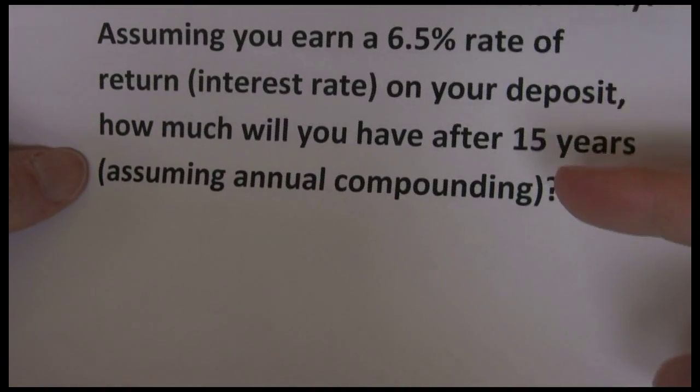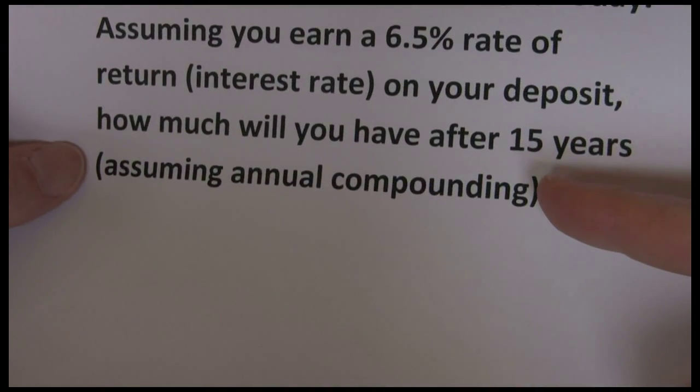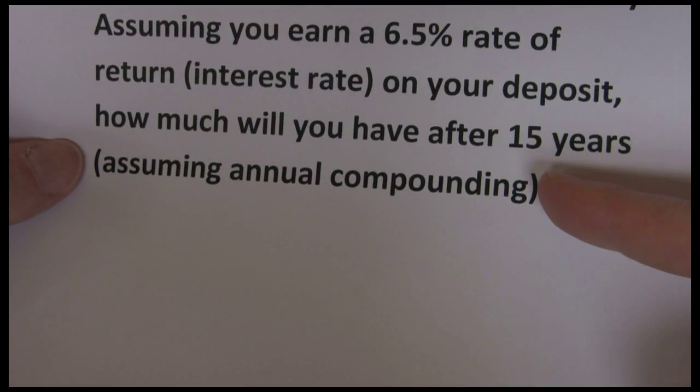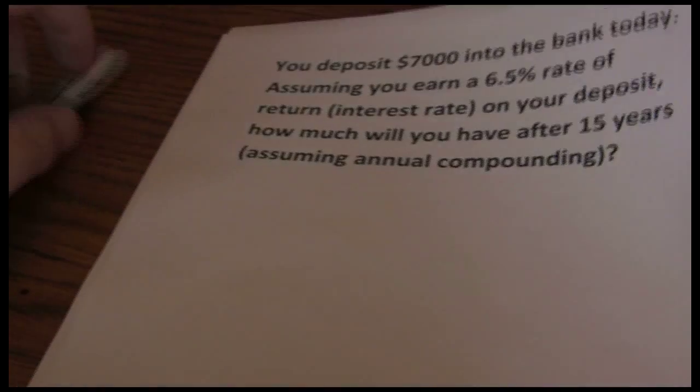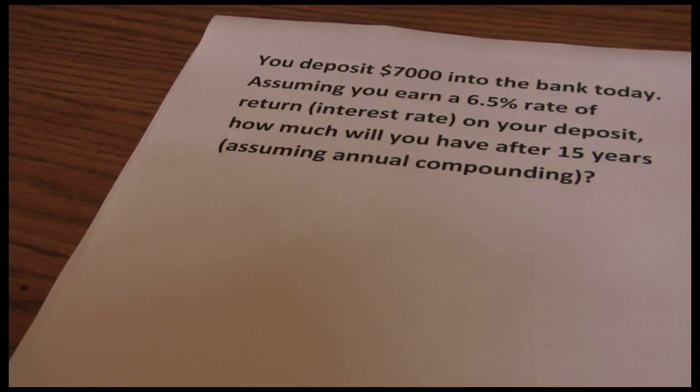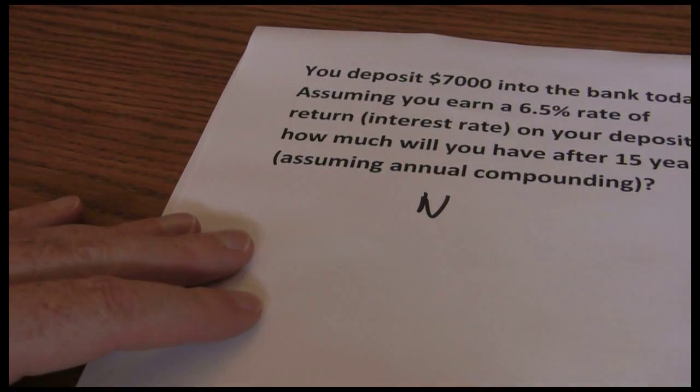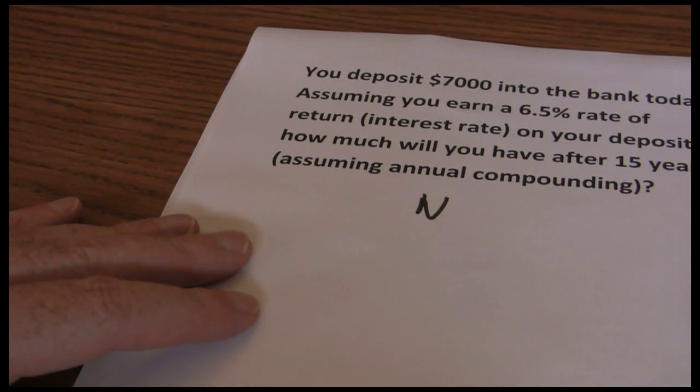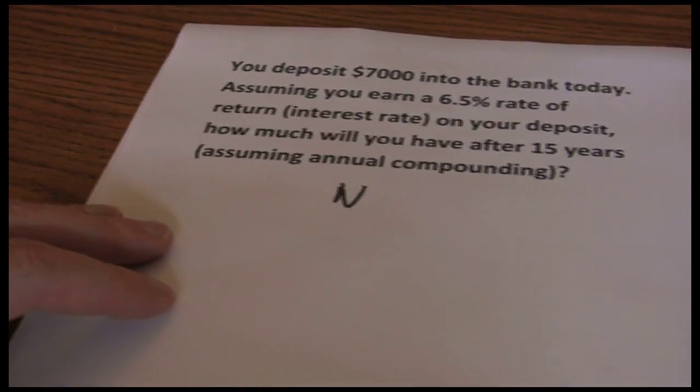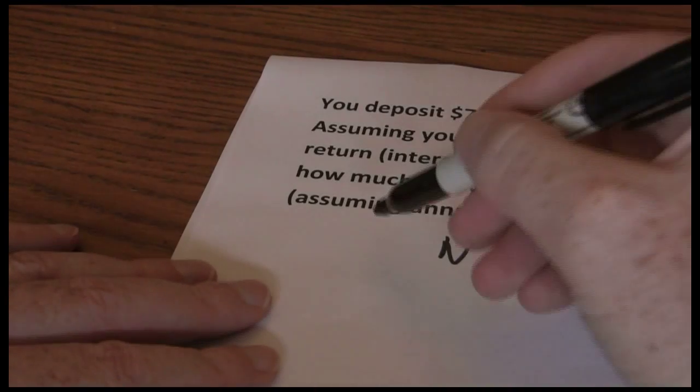This is a basic five key approach. We're trying to solve for how much you're going to have after 15 years, so we're solving for the future value. So let's just go ahead and put up our five key approach. First thing we always have is N. How many periods do we have? And N in this case is 15 years.